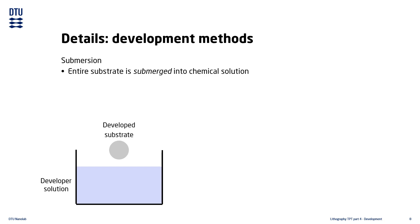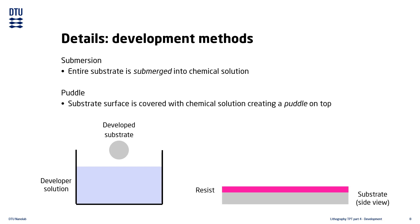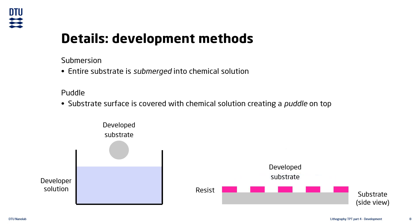The second method is puddle development. With this method, a small puddle of chemical is made on top of the substrate. The puddle covers the entire surface of the substrate and is held in place by surface tension. This method is typically done in automated development tools.